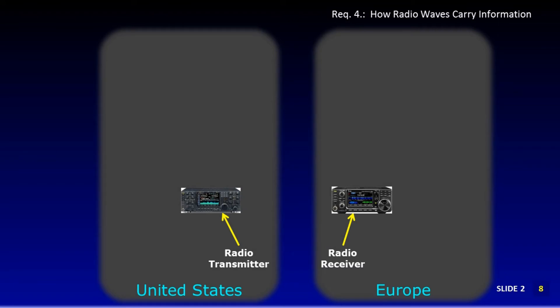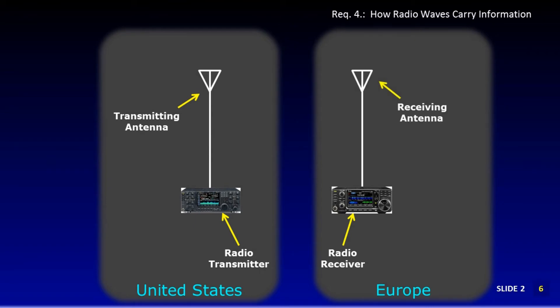They can be across the city, county, country, or world, or even in space. Transmitters must be connected to an antenna to send out the waves. Receivers must also have some sort of antenna to collect the waves.